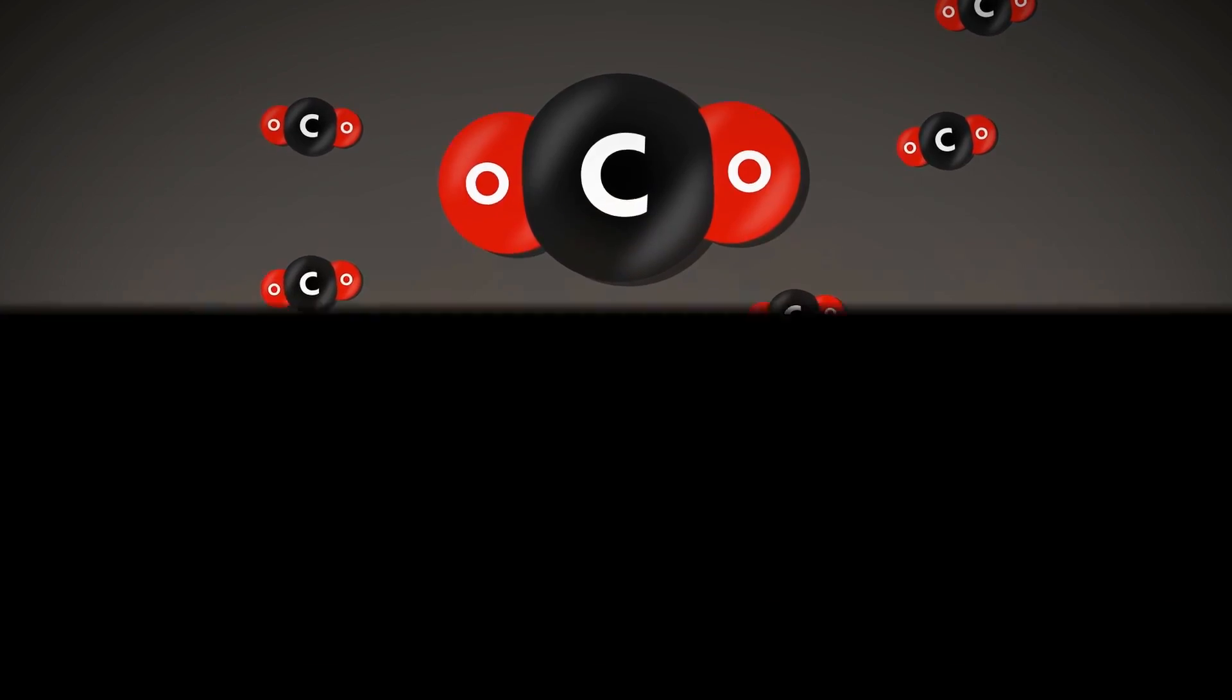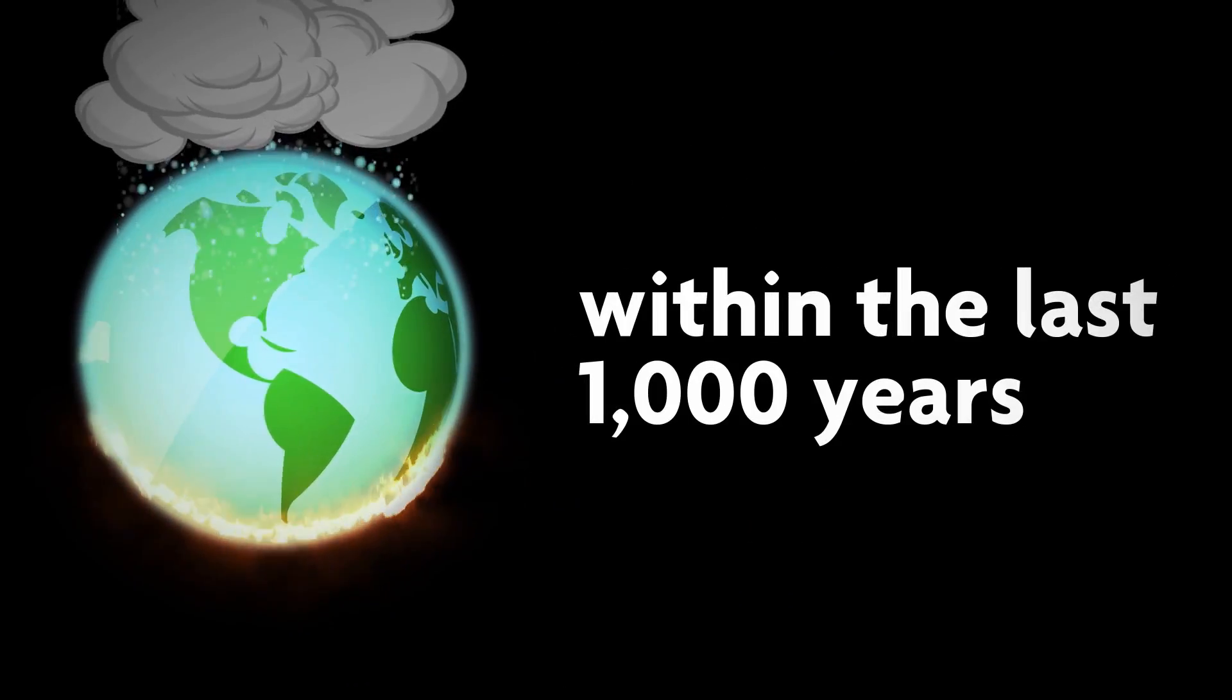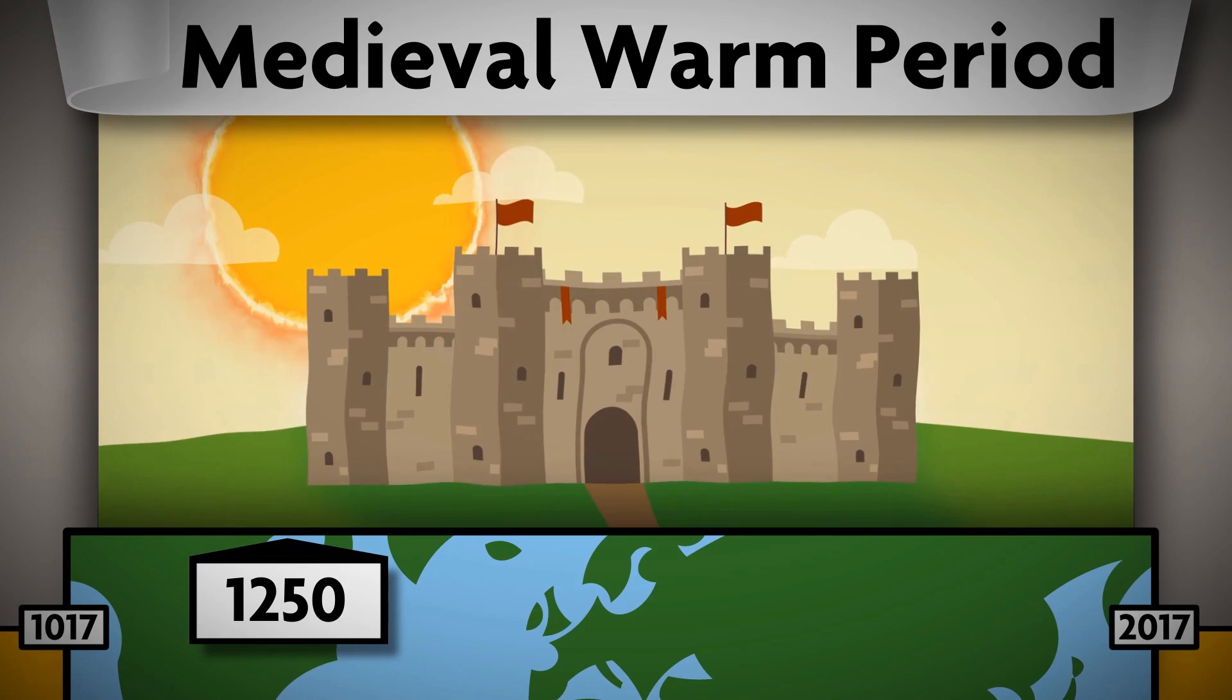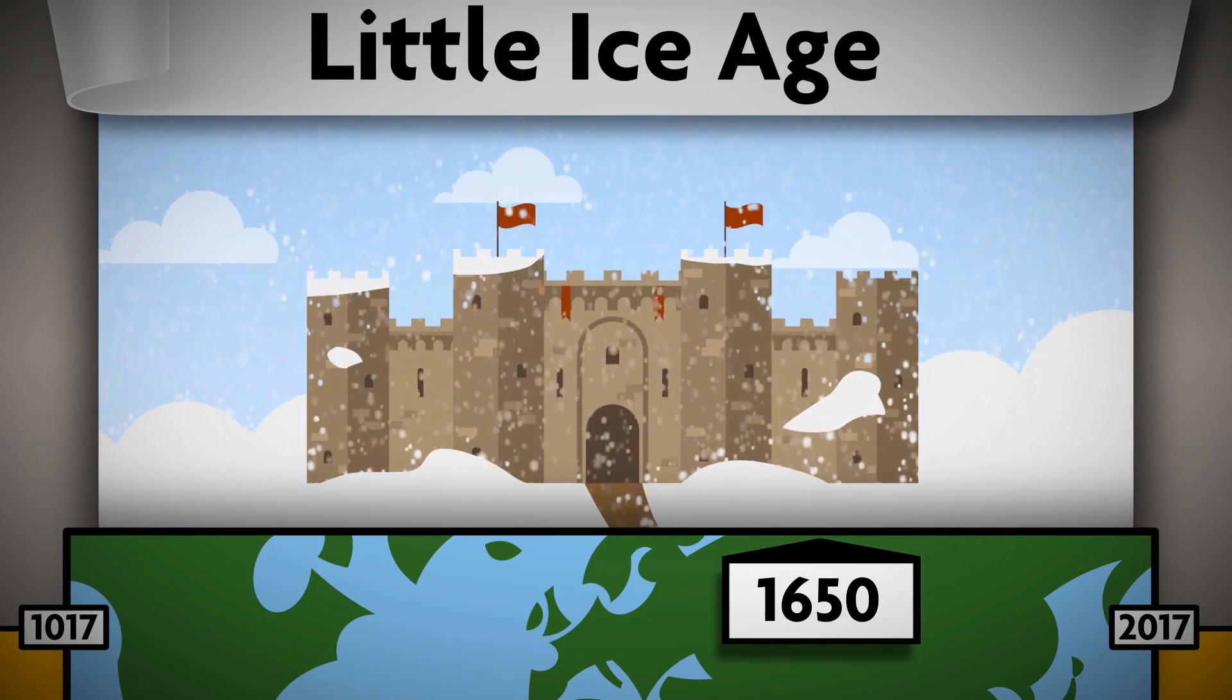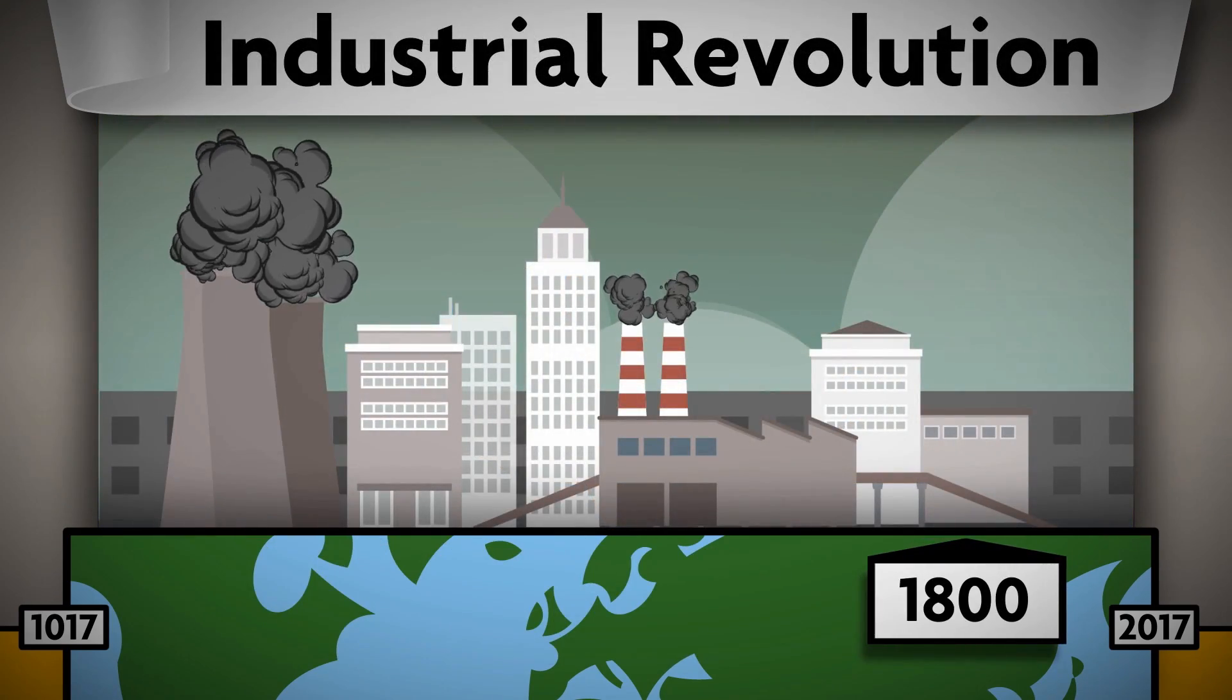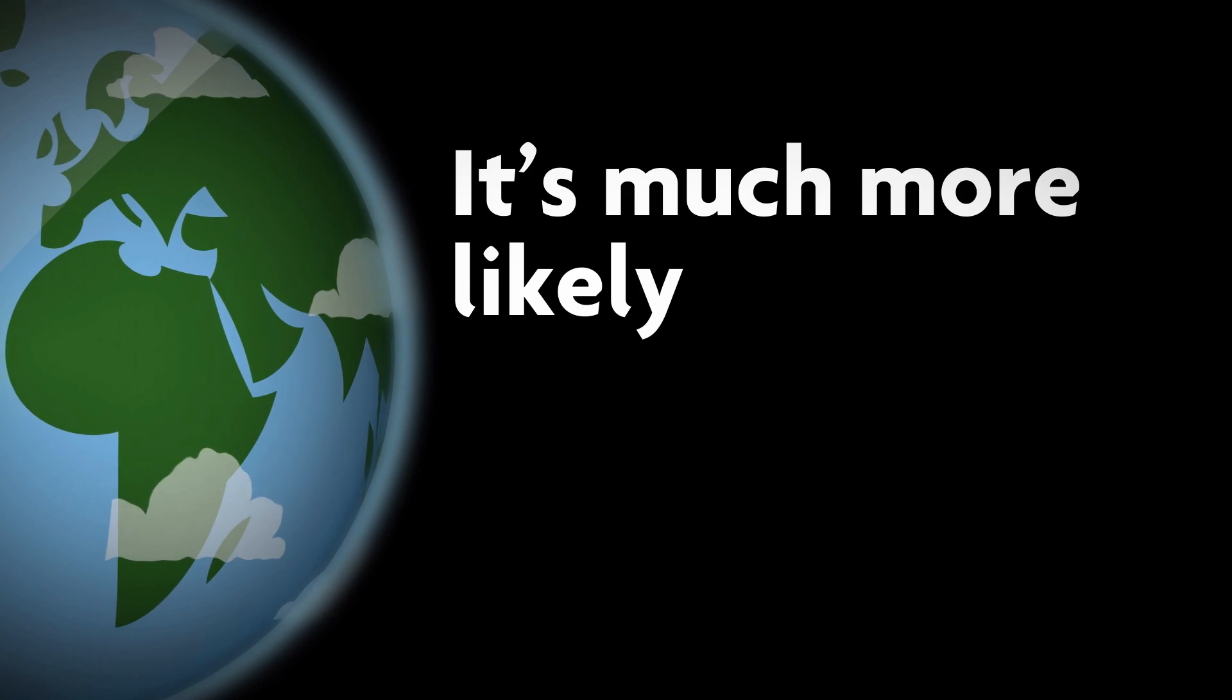And two significant changes in climate occurred within the last thousand years: the medieval warm period and the little ice age. Both changes happened before human industry could have influenced climate, so it's much more likely that climate change occurs naturally.